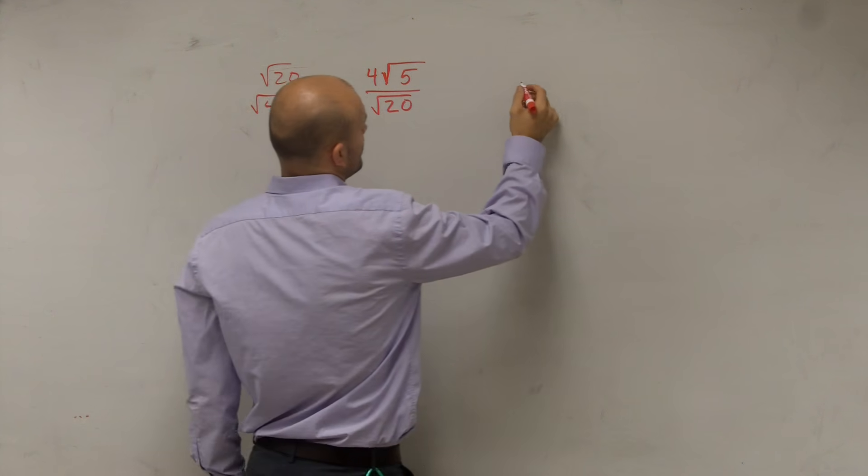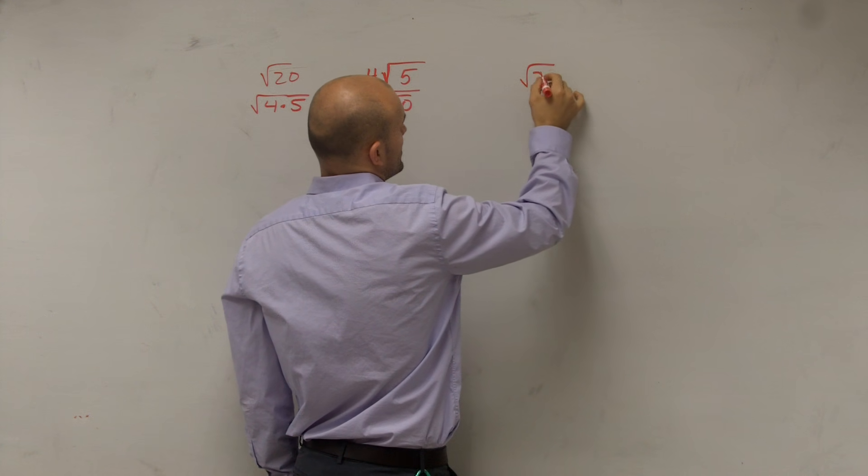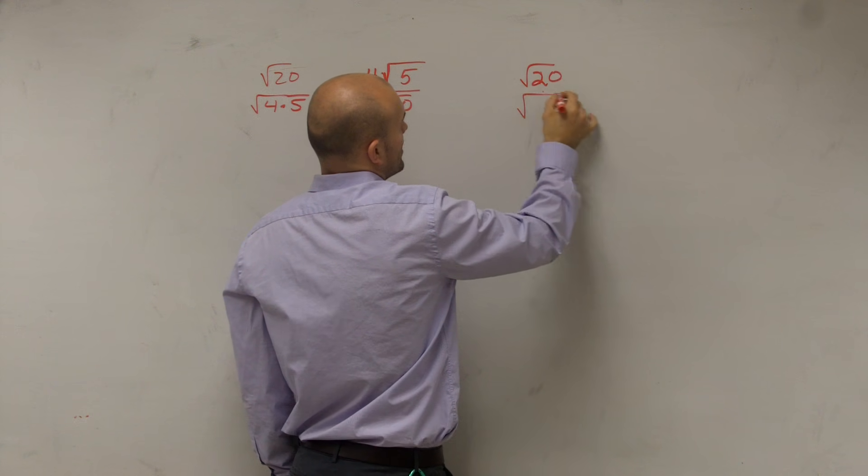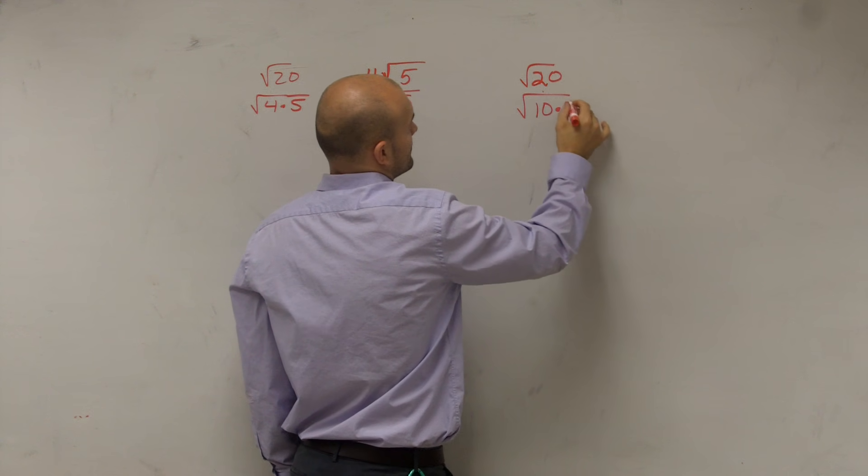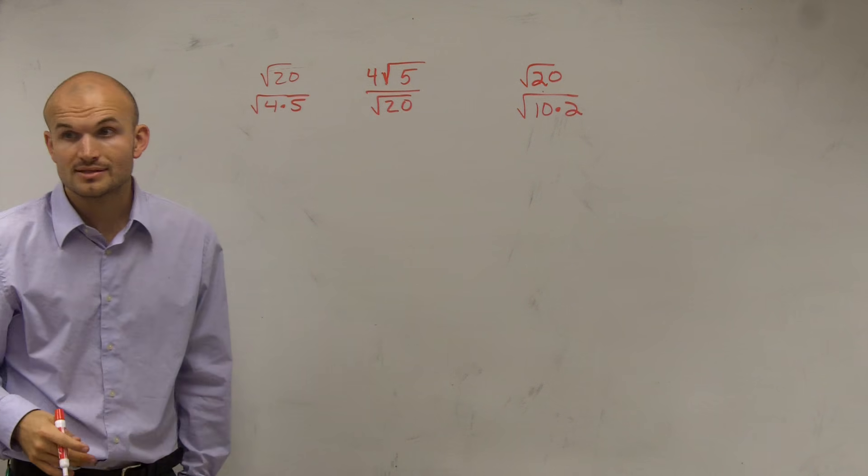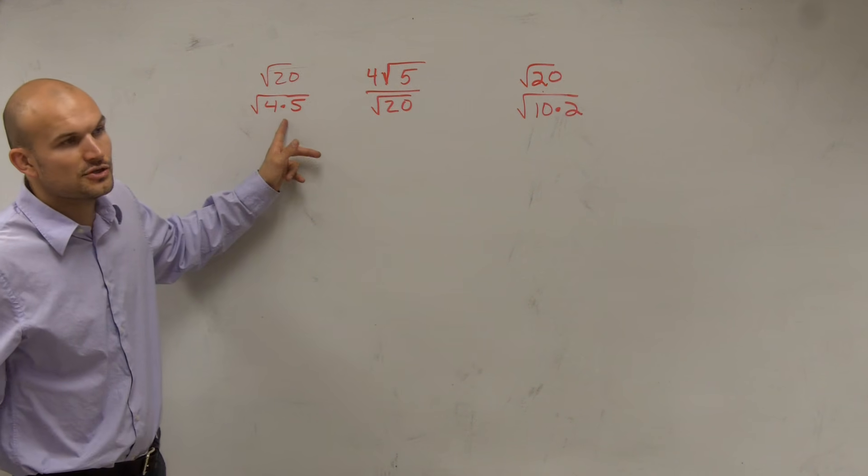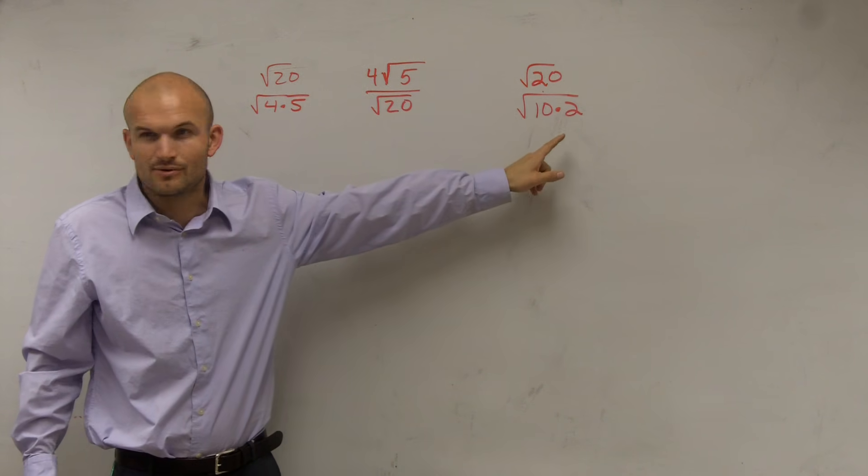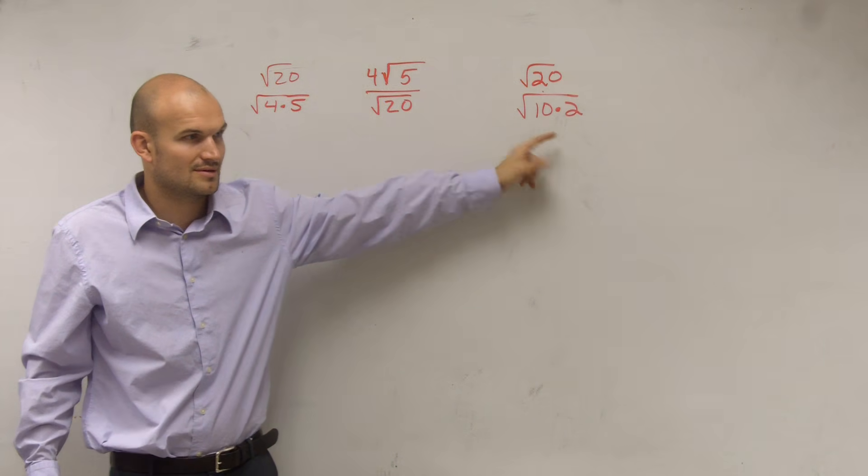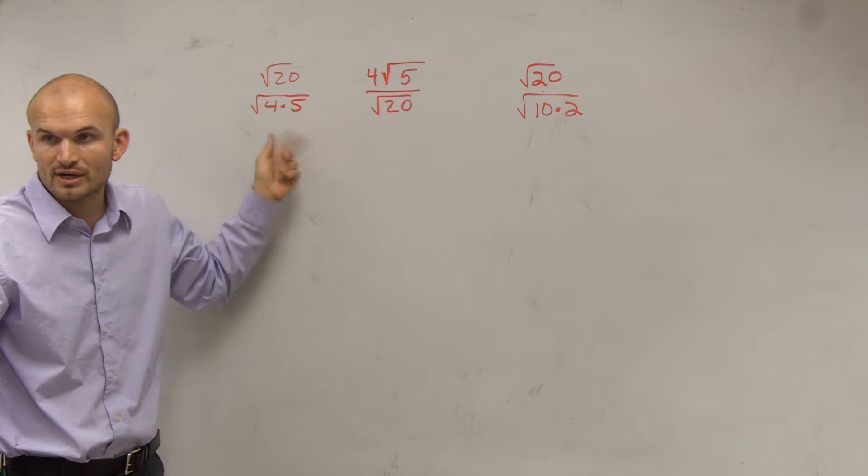Now, some of you might say, well, yeah, that's pretty good. But you can also do the square root of 20 as the square root of 10 times 2, right? Now, why do we want to do it this way rather than that way? Does anybody want to raise their hand and tell me that one? Yes, exactly. Because 4 is a square number.